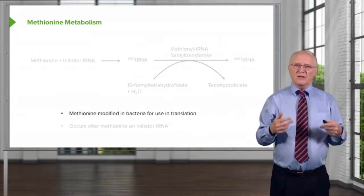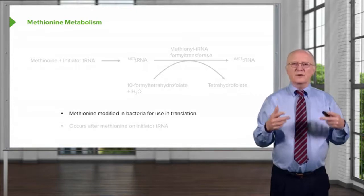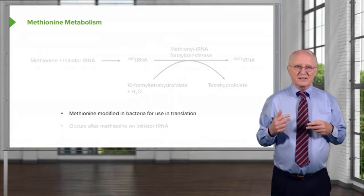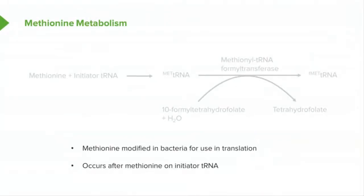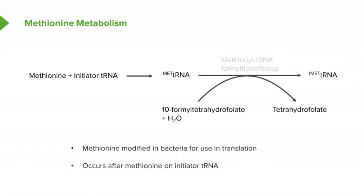Methionine is modified in bacteria before it is incorporated into proteins. In bacterial translation, the very first amino acid put into proteins is not methionine but a modified form called formylmethionine. Like the synthesis of selenocysteine, formylmethionine is made by modifying a methionine that is already on a transfer RNA. Methionine combines first with its initiator tRNA. Then the formyl group from 10-formyltetrahydrofolate is added, producing formylmethionine on the tRNA and releasing tetrahydrofolate. The enzyme catalyzing this reaction is methionyl-tRNA formyltransferase.